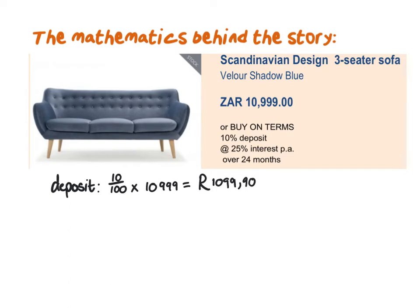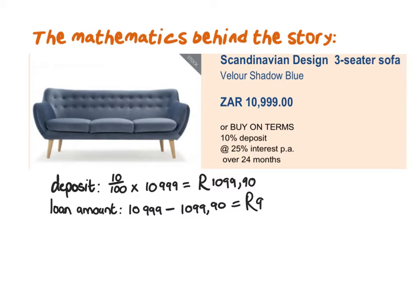Now that we know the deposit, how much do you still owe the shop owner? What you still owe is called the loan amount — the amount you need to loan, or the amount you have to pay off over the period of time, not yet including interest. To work that out, we take the price of the couch and subtract the deposit already paid. This gives us a loan amount of R9,899.10.